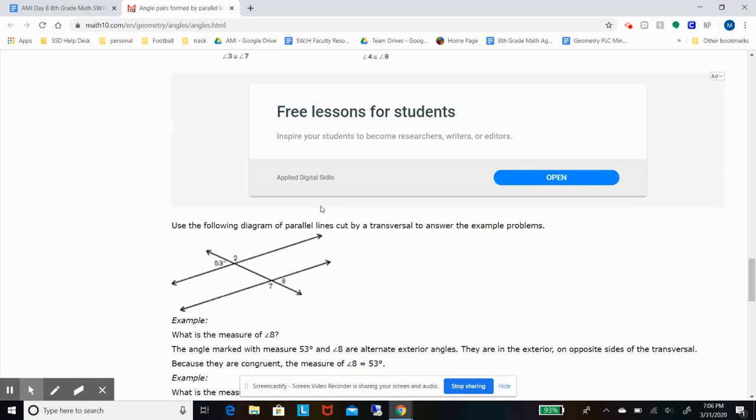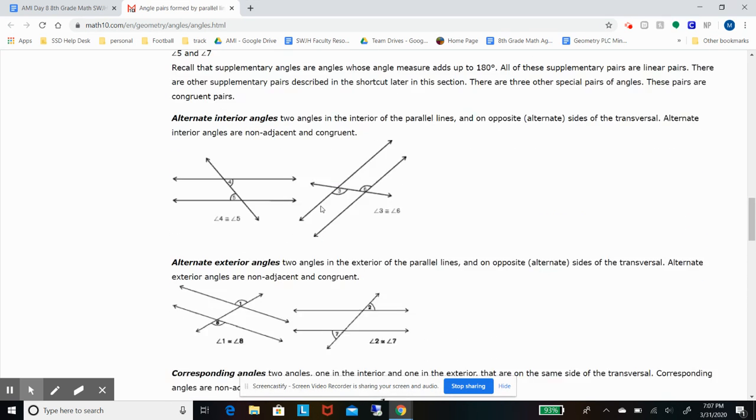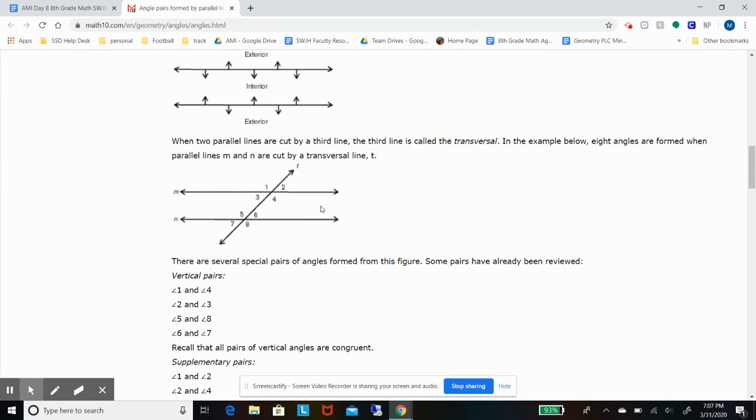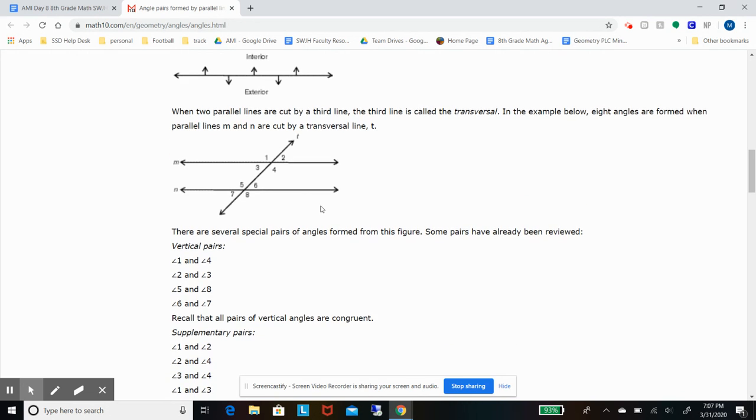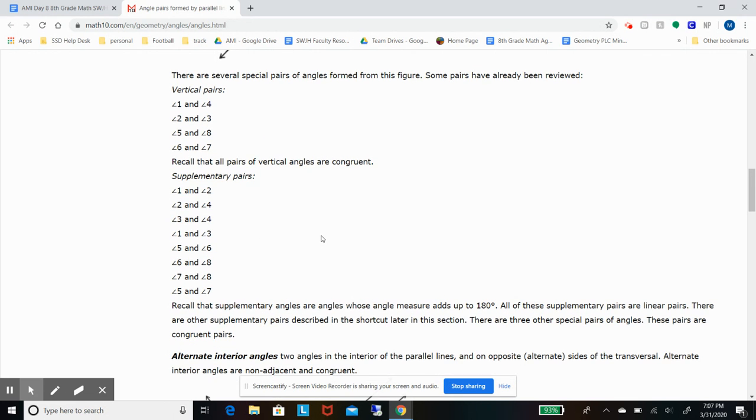And so I guess the only other thing we need to make sure that we understand is congruent angles. And there are lots of congruent angles when we're talking about parallel lines. So I'm just going to list them off real quick. Vertical angles are congruent. Corresponding angles are congruent. Alternate interior angles are congruent. And alternate exterior angles are congruent.